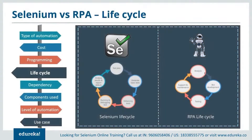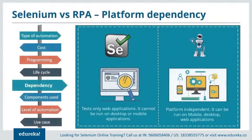The lifecycle of Selenium is more complicated compared to that of RPA. Selenium deals with test planning, generating basic test cases, enhancing the cases, running and debugging the test, and analyzing and reporting defects. Whereas RPA deals with just four processes: analysis, bot development, testing, and support and maintenance. On platform dependency: Selenium can run on different browsers but can only test web applications — no mobile or desktop applications. Whereas RPA can run on any platform, be it web, mobile, or desktop applications.